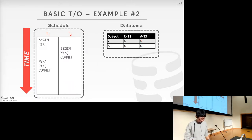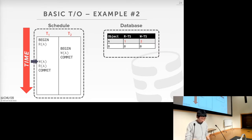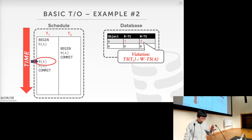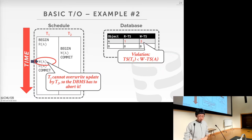Second example showing an abort: T1 (timestamp 1) reads A, then T2 (timestamp 2) writes A — valid. Then T1 wants to write A, but T1's timestamp (1) is smaller than the write timestamp of A (now 2 from T2). This violates the serial order, so T1 must abort. The basic timestamp ordering protocol cannot allow this to commit.